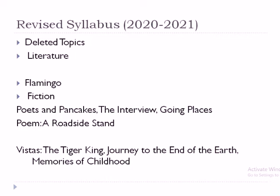First, I would like to touch on the topics that have been deleted from literature. From Flamingo, three texts have been deleted: Poets and Pancakes, The Interview, Going Places, and one poem — A Roadside Stand. From Vistas, the deletions are The Tiger King, Journey to the End of the Earth.